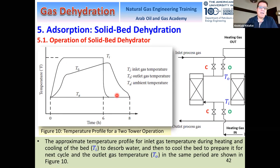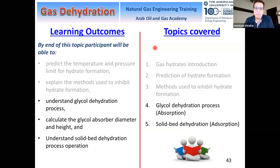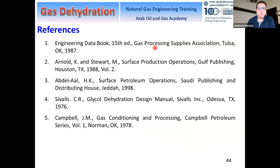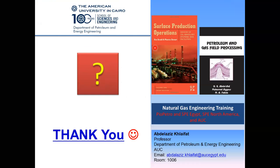As a wrap-up, today we covered three outcomes: the glycol dehydration process by absorption, a design example calculating the diameter and height of the absorber, and solid bed dehydration — the physical process of adsorption. These are the references I referred to — you can gain more information from them if needed. Thank you so much.